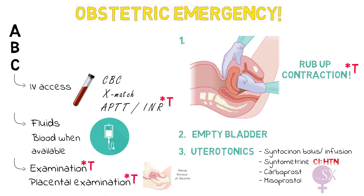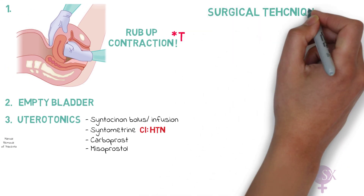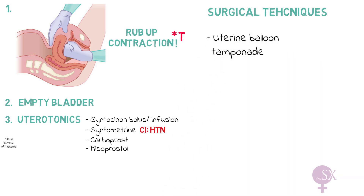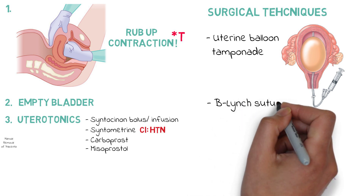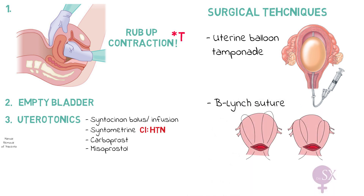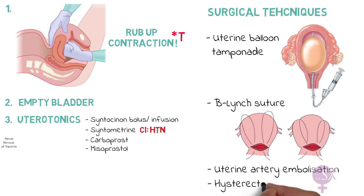If medications and their combinations have been used but the patient is still bleeding, there are surgical options. First is uterine balloon tamponade, using a Rusch balloon inflated inside the uterus with saline, pressing against the uterine walls to force contraction. If PPH occurs after cesarean section, we opt for the B-Lynch suture, which compresses the uterus. Further options include uterine artery embolization, and as a last resort, a hysterectomy.